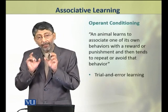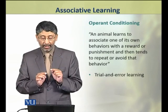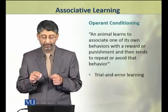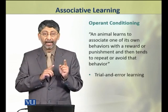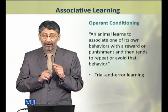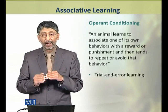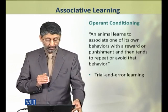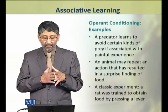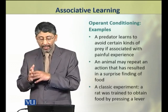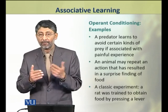In operant conditioning, an animal learns to associate one of its own behaviors with a reward or punishment and then tends to repeat or avoid that behavior. इस behavior को हम आम तौर पर trial और error learning भी कैते हैं. For example, एक predator ऐसे तमाम prey से avoid करने लग जाता है, which are associated with painful experience.